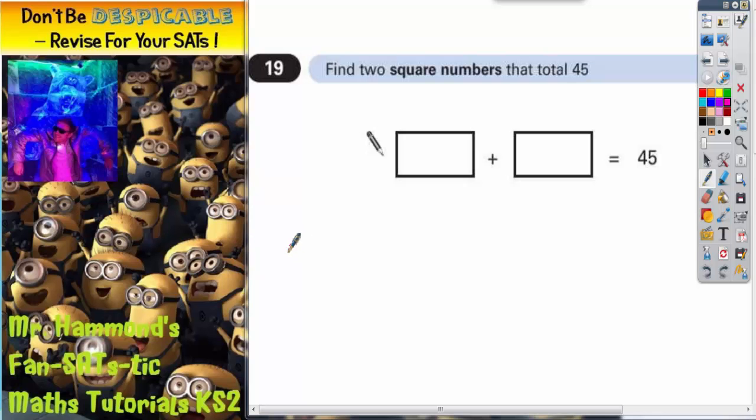So, we've got 1 times 1 is 1, 2 times 2 is 4, 3 times 3 is 9, 4 times 4 is 16, 5 times 5 is 25. Remember,